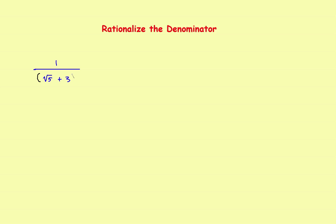Let me remind you of what the conjugate is. Think of this as being in parentheses — so the square root of 5 plus 3 is in parentheses. The conjugate of the denominator: if it's the square root of 5 plus 3, then the conjugate would be the square root of 5 minus 3. You change the sign of the second term. So we're going to multiply this by the conjugate, which would be the square root of 5 minus 3.